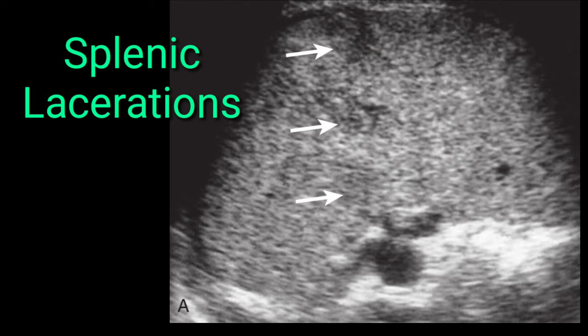Finding laceration on ultrasound imaging is slightly difficult. The white arrow shows splenic laceration — laceration is actually discontinuity of the regularity of the parenchyma of any organ. It appears as hypoechoic areas within the organ's parenchyma. On this splenic image, hypoechoic areas are visible within the splenic parenchyma. The patient was in the emergency department with a history of trauma. Always mention the site and measurement of the laceration on your report.